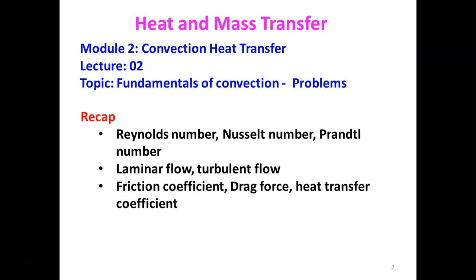From the previous lecture, we recap the topics discussed earlier. We defined the Reynolds number, Nusselt number, Prandtl number, and the significance of Reynolds number and Prandtl number in convection heat transfer. We classified the flow as laminar flow and turbulent flow based on the Reynolds number. For external flow, when the Reynolds number is less than 5×10⁵, the flow is laminar. When the Reynolds number is greater than 5×10⁵, it is turbulent flow.